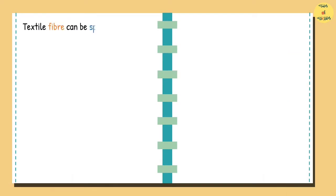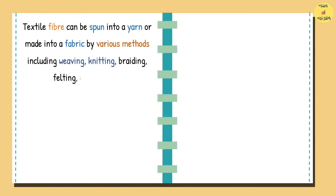Textile fiber can be spun into a yarn or made into a fabric by various methods including weaving, knitting, braiding, felting, and twisting.